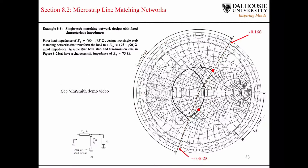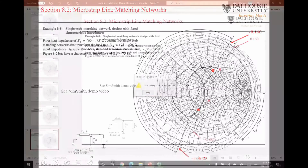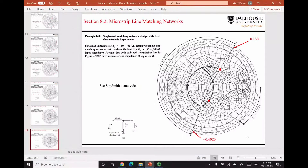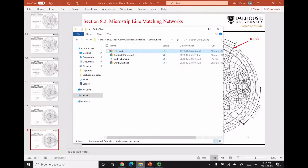So far we've seen two approaches to solving this problem. The first approach utilized the analytical formulas, which represent all of the impedance transformations and the transformations of the reflection coefficients. The second approach made use of the scales that exist on the Smith chart itself. The third approach is going to be the use of SimSmith. So I prepared a little video demonstration of how I would handle this problem using SimSmith.